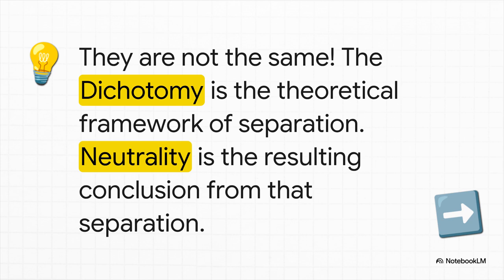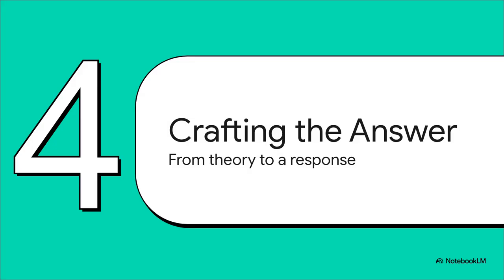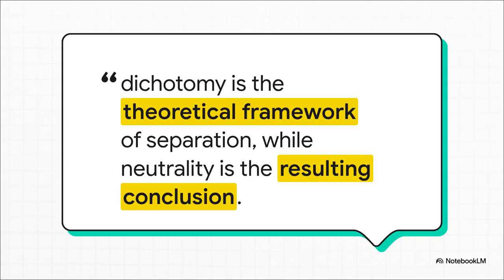Let's be super clear, because this is the heart of the answer. Are they the same thing? Absolutely not. It's cause and effect. Dichotomy is the theory — the big idea of separation. Neutrality is the result, the direct consequence of that idea. Getting this distinction crystal clear is without a doubt the key to a high-scoring answer. Using power phrases like 'theoretical framework' for the dichotomy and 'resulting conclusion' for neutrality shows a much deeper level of understanding — that's the stuff that really impresses a grader.